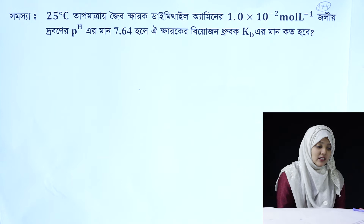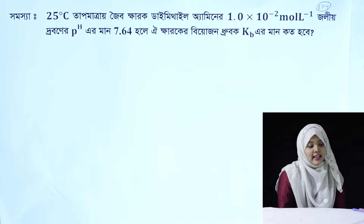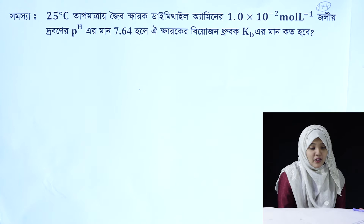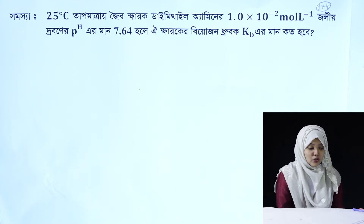Assalamualaikum, it's good to see you. Today we are going to show you how to do this — this is an Acid-Base pH calculation. Here we are going to show you how to do this at 25 degrees Celsius. This is Dimethylamine at 1.0 into 10 to the power minus 2 mol per liter.